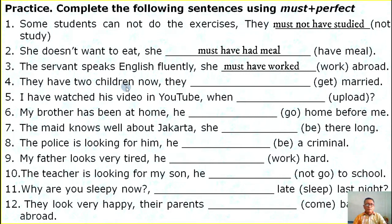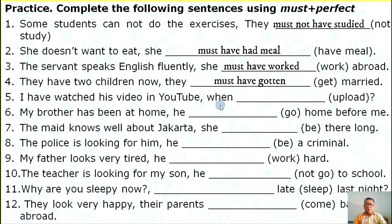Number four: They have two children now. They must have gotten married. Number five: I have watched his video on YouTube. When must he have uploaded it?